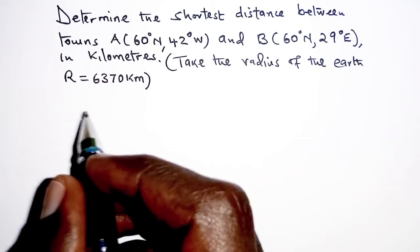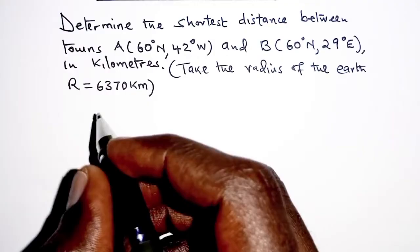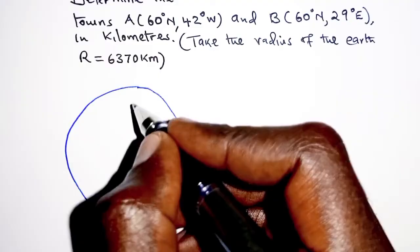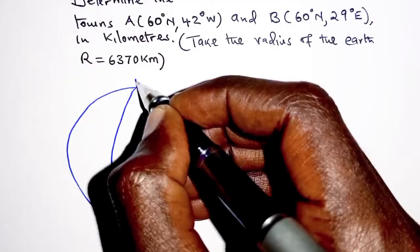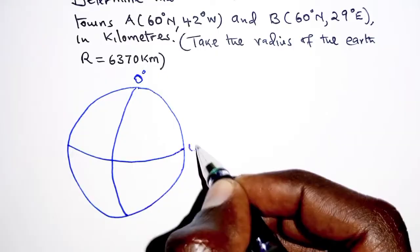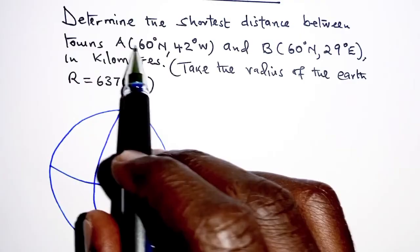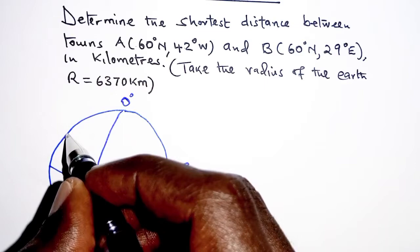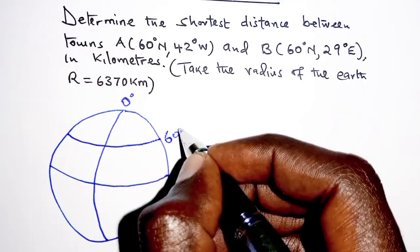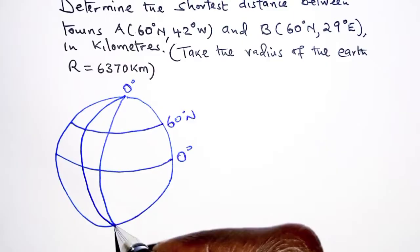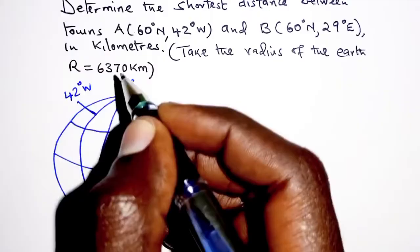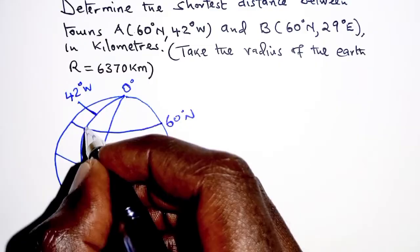Let us locate towns A and B on the surface of the earth using this sketch. We have two reference points: the prime meridian, set at zero degrees, and the equator, also set at zero degrees. Town A lies 60 degrees north, so it lies on latitude 60 degrees north of the equator, and 42 degrees west of the prime meridian.